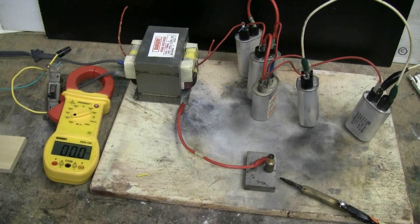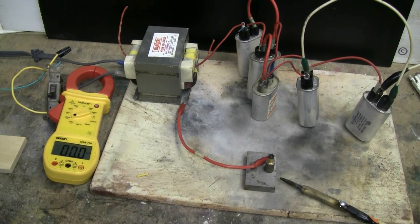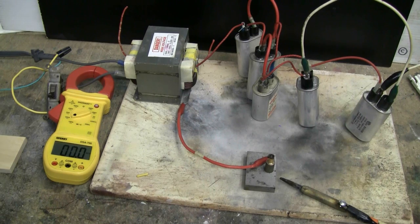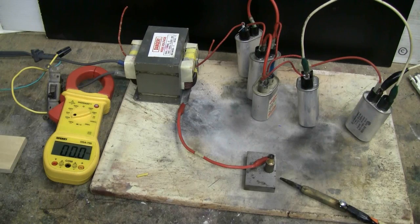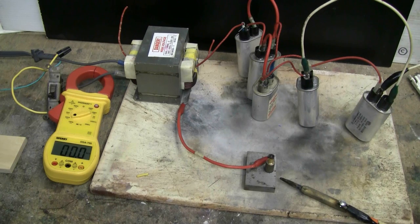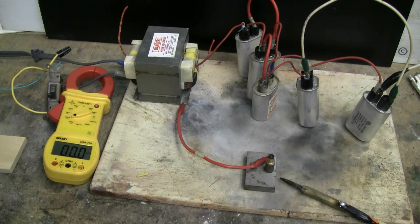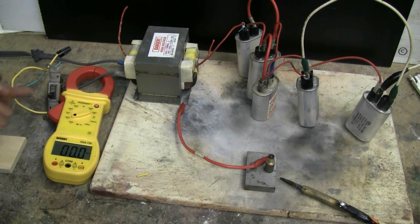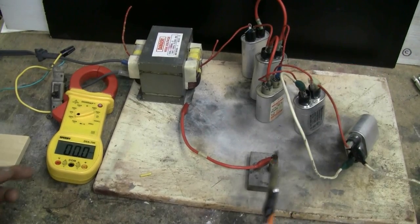We first looked at the primary side current draw with no capacitors attached. While there are still 5 capacitors in parallel on the secondary side, let's draw those arcs again and see what the primary side current is. The clamp on ammeter is set at the 0 to 200 AC amp range. Let's give this a try here. Oops.